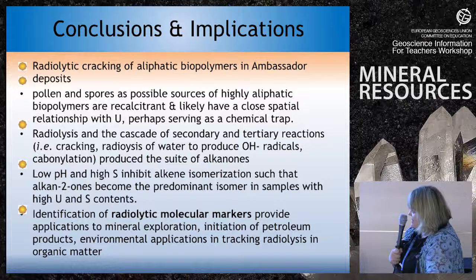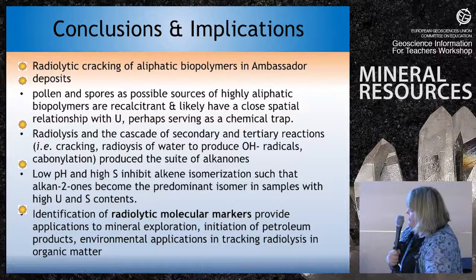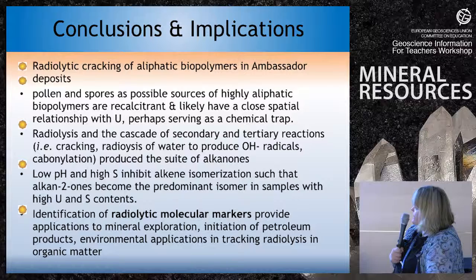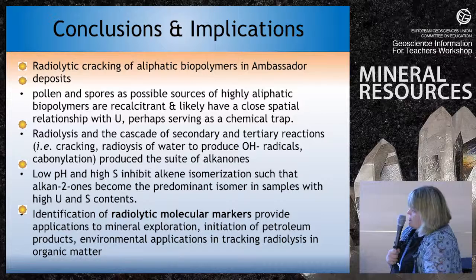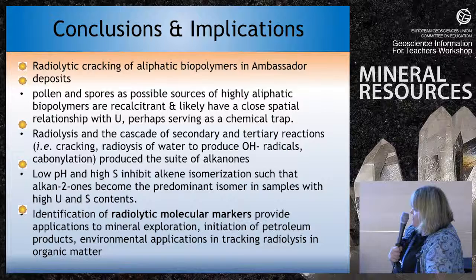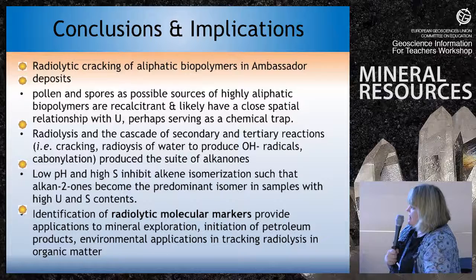Our conclusion for this first case study: radioactive cracking of aliphatic biopolymers in the Ambassador deposit has occurred. Pollen and spores of plants are highly aliphatic naturally occurring polymers, recalcitrant and with a close spatial relationship with uranium, perhaps serving as a chemical trap. Further work is underway to determine whether that is uranium-4 or uranium-6. Radiolysis and the cascade of secondary and tertiary reactions produce radicals and carbonylation to form these unusual suites of alkanones. This is the first identification of radioactive molecular markers with applications to mineral exploration — breakdown products of these alkanones in groundwater may enable tracking of uranium.